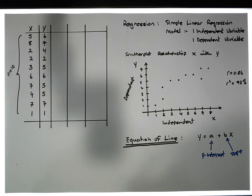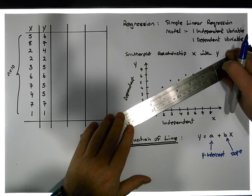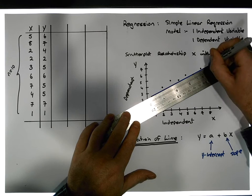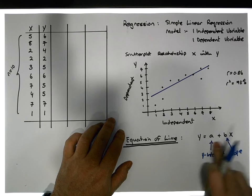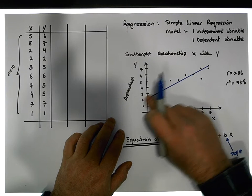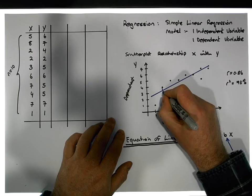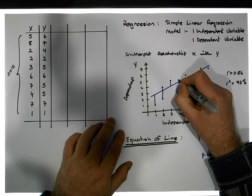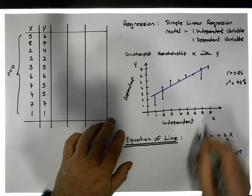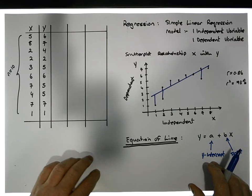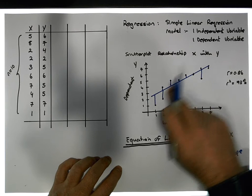Before we look at the formulas, let me just assume that I have a best fit line going through this particular data set. I don't know what this line looks like just yet, but let's assume the line looks something like this. What we're trying to find is the line that minimizes these particular vertical distances — for each observation there is a small vertical distance away from this particular line, and the equations we use are derived from creating an equation of a line.